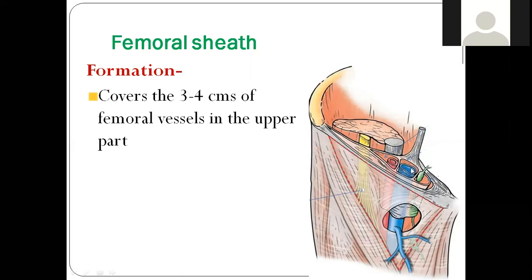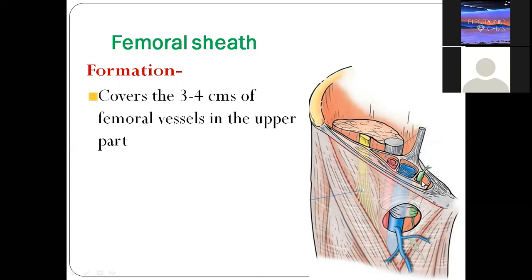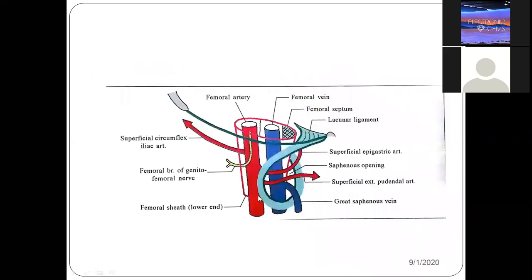The vein and artery are enclosed by the femoral sheath, as we have been discussing. This is a quick review of what we have already studied — the sheath is covering the upper 3 to 4 cm of the femoral vessels. Now, see here — this is the anterior superior iliac spine and this is the pubic tubercle.